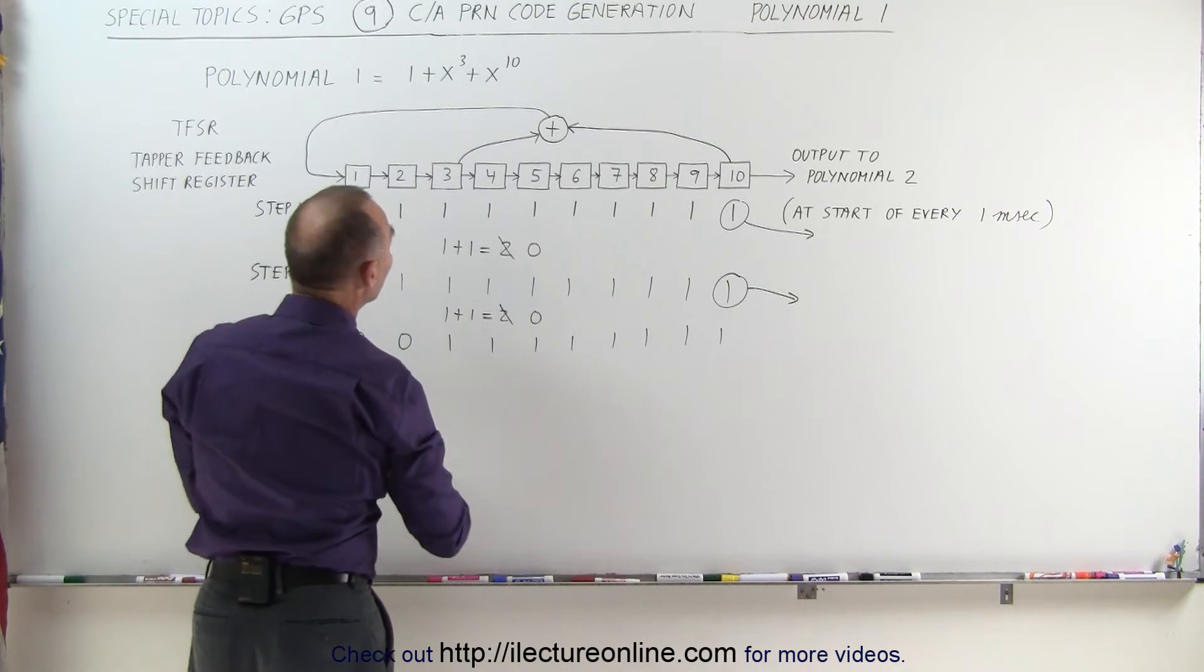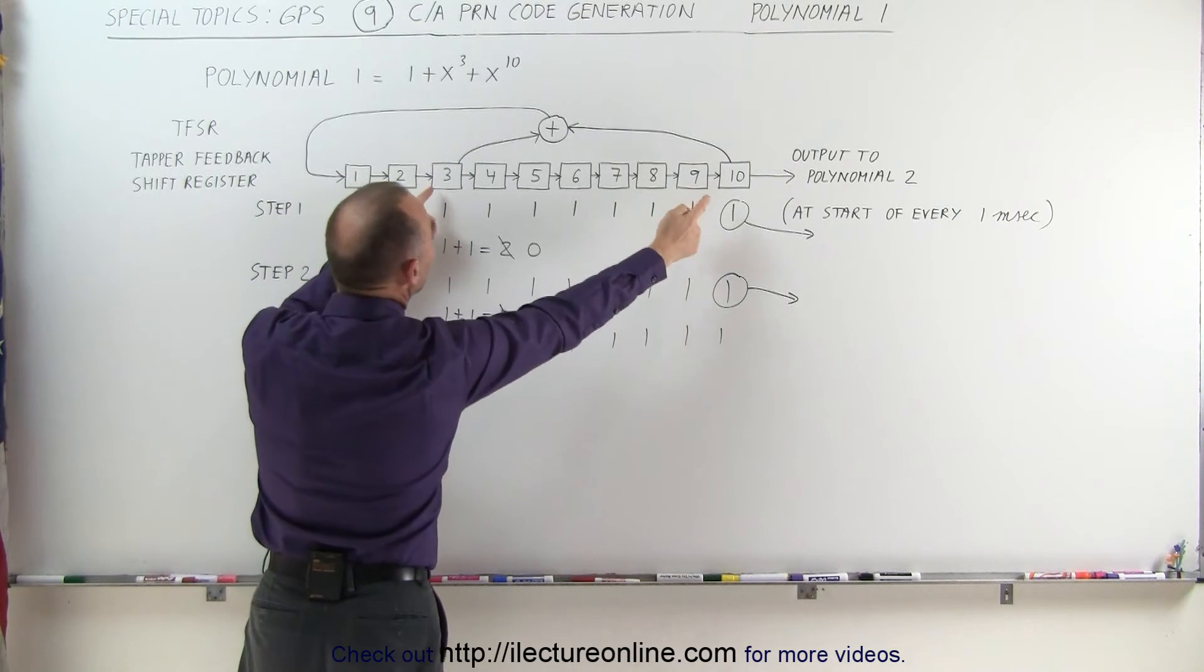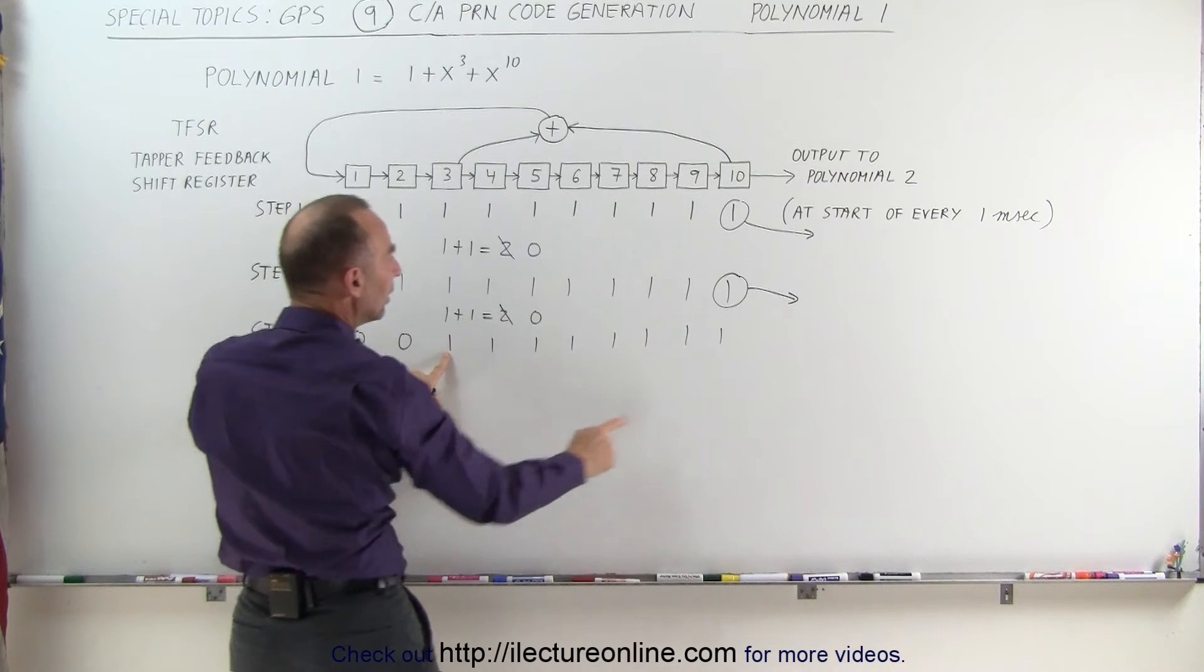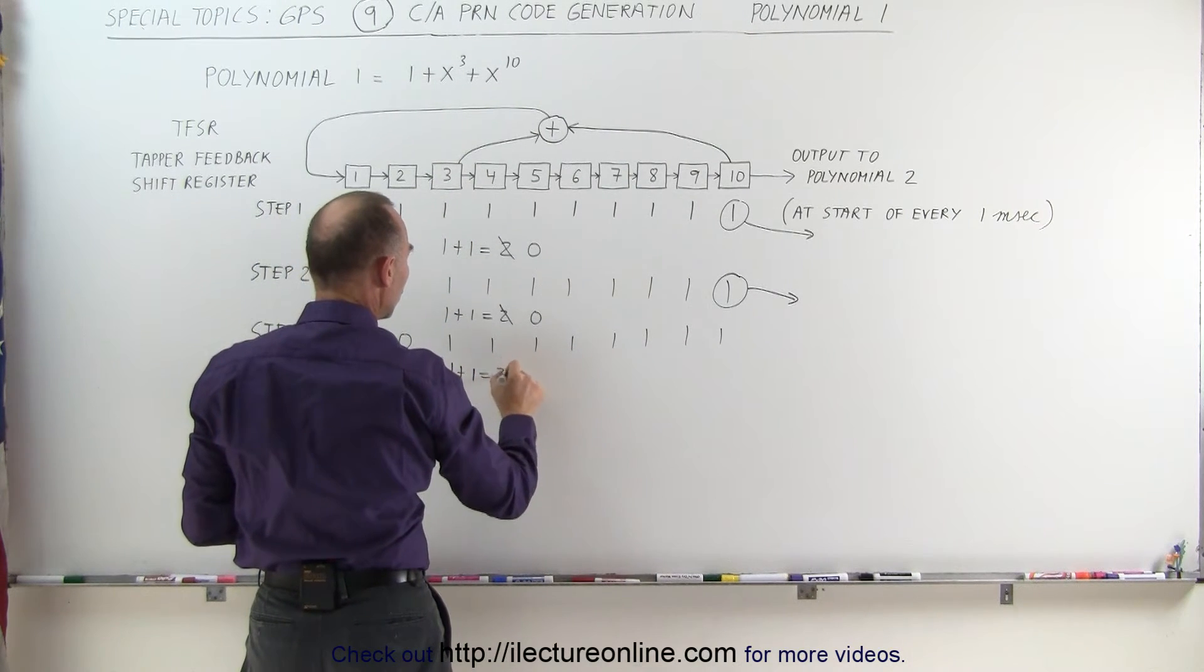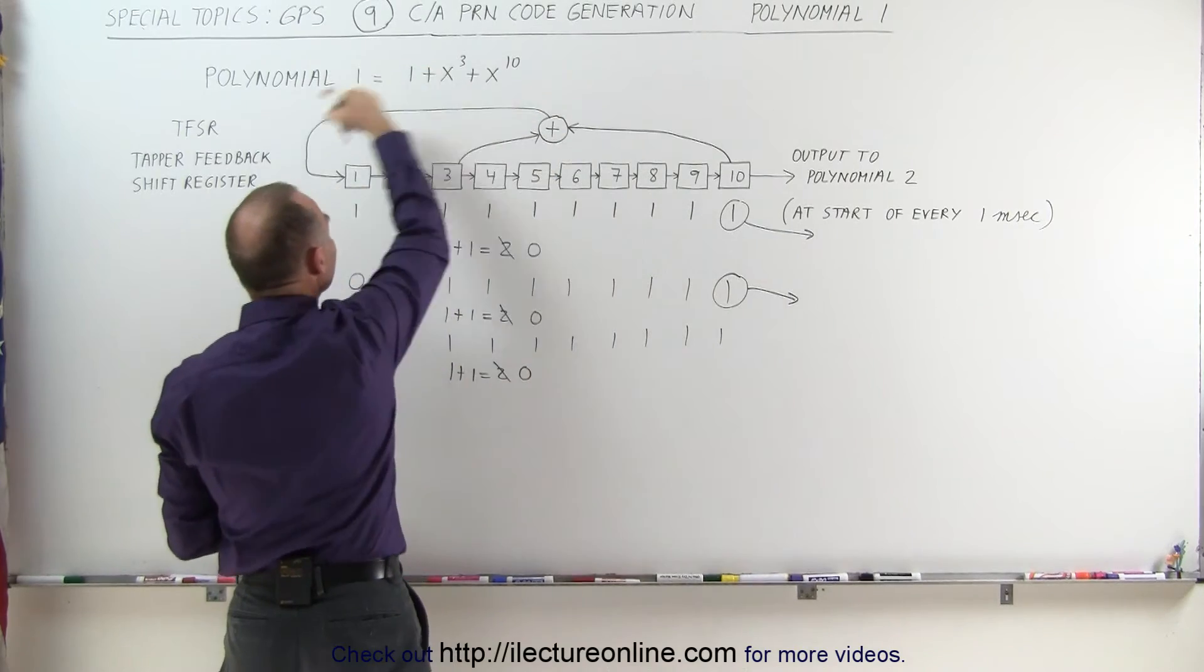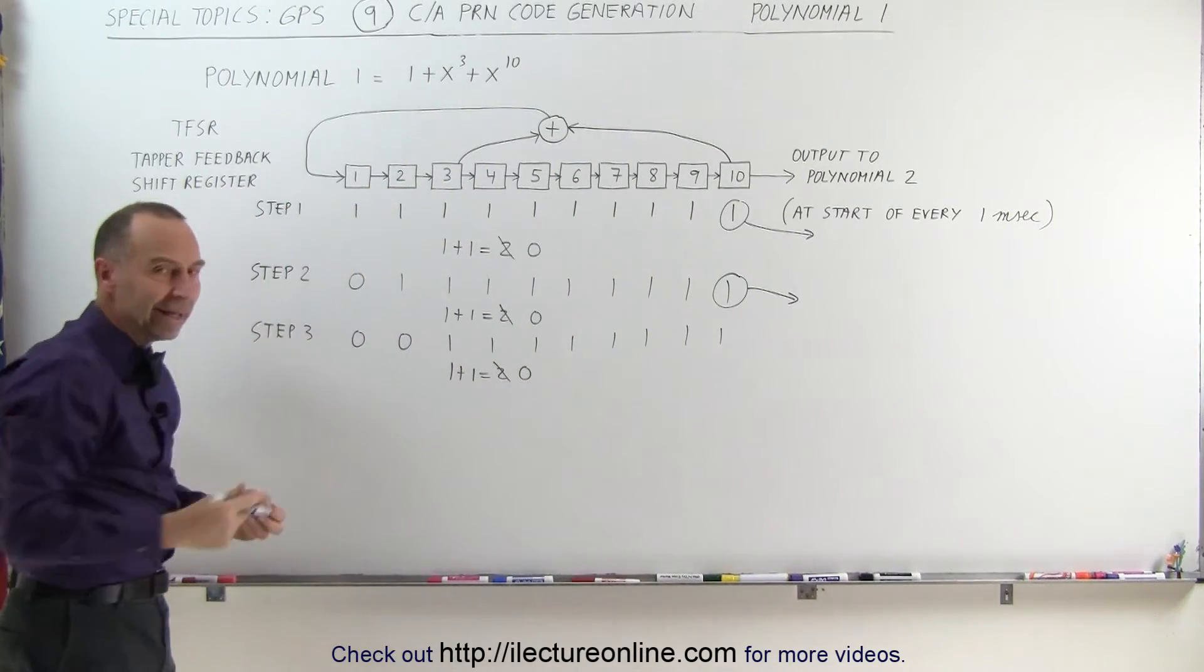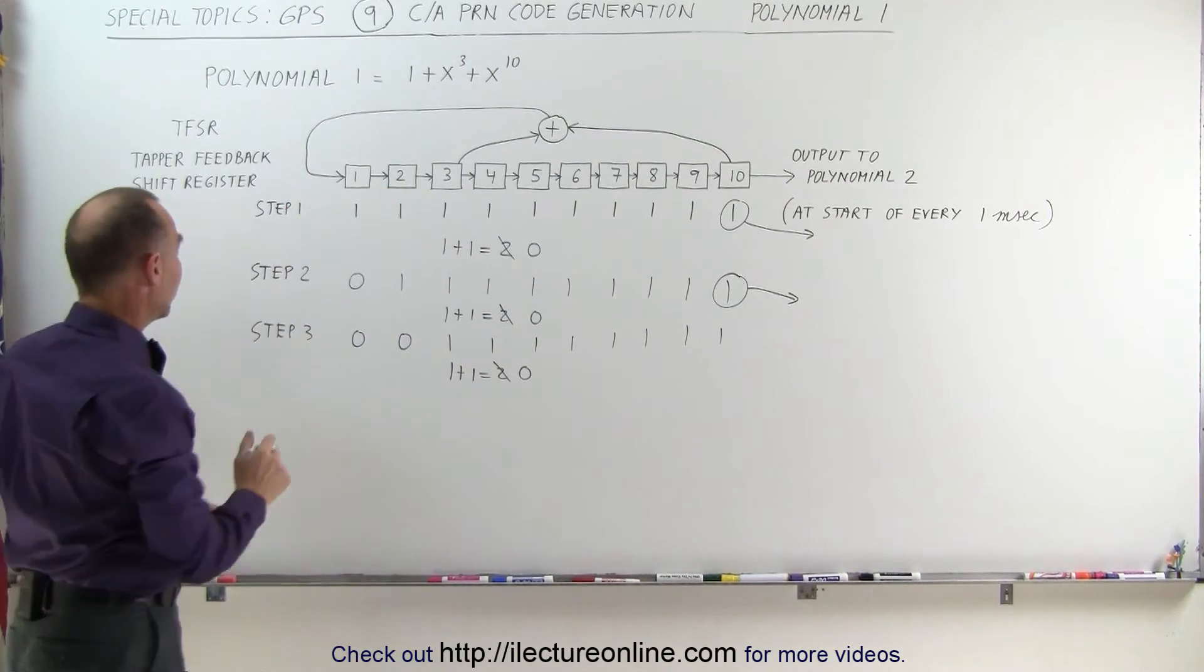On the next step, we again take 3 and 10. We sum them together, 3 is a 1, 10 is a 1. Again, we get 1 plus 1, which is 2, which becomes 0. That then gets fed into position 1. And I think at this point, you can see the pattern.